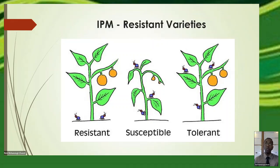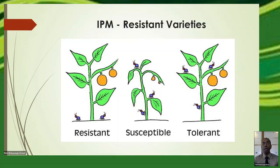Now we come to the main part of our session: chemical control. Chemical control is not discouraged, but it should be used as a last resort when you have pest issues that other methods haven't resolved. It's important that you know about the chemical before you use it.